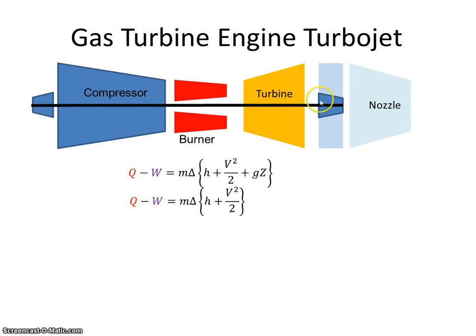As the air flows through, there is no change in kinetic energy, so we can eliminate that. And this applies to the turbine and the compressor. So there is no heat added in this part of the engine. So that's zero.